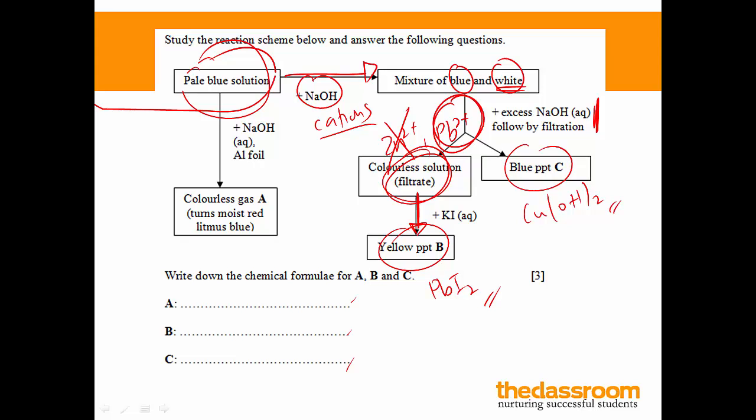The blue precipitate C, copper 2-hydroxide. Now finally we go down the arrow here. We add sodium hydroxide, aluminum foil. Now this is a test for nitrates. And if the nitrate ion is present, you will get ammonia gas. Now ammonia gas is the only alkali gas in your syllabus and this will turn red litmus paper blue. So this is ammonia NH3 gas. Now to get full marks for this question, you need to spell out all the compounds present. So we start with A, ammonia gas.